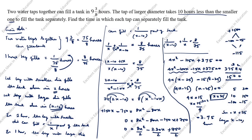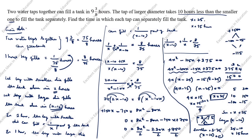The larger diameter tap takes x minus 10 hours. If x = 3.75, then x minus 10 = 3.75 minus 10 = minus 6.25, which is negative and not valid. So we do not take x = 3.75. We take only x = 25. Therefore, smaller diameter tap fills the tank in 25 hours and larger diameter tap fills it in x minus 10 = 25 minus 10 = 15 hours.